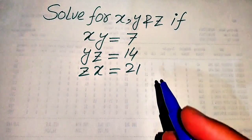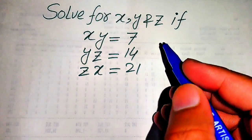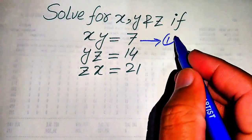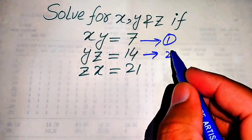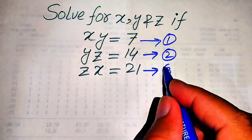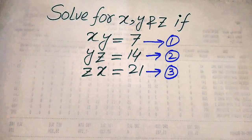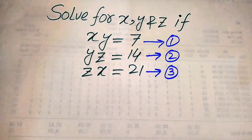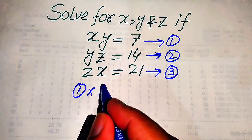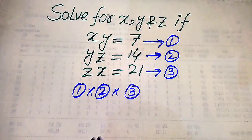We have three equations and we call this equation number one, this is equation number two, and this is equation number three. In the next step we multiply each of these three equations: equation number one is multiplied by equation number two is multiplied by equation number three.